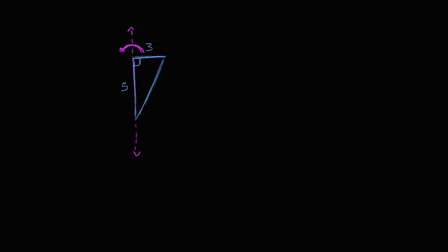To think about it in three dimensions, I'm going to try to look at this thing in three dimensions. Let me draw this same line at an angle so we can visualize the whole thing in three dimensions. Imagine if this was sitting on the ground — so that's our magenta line.